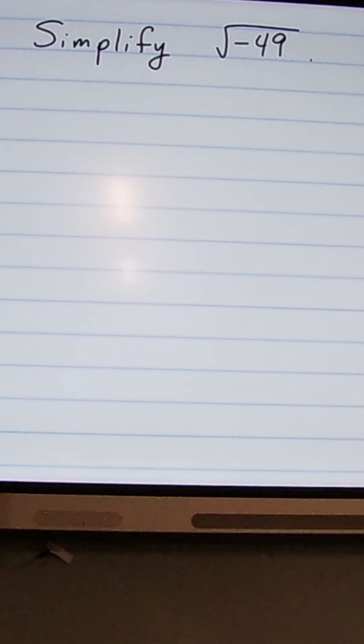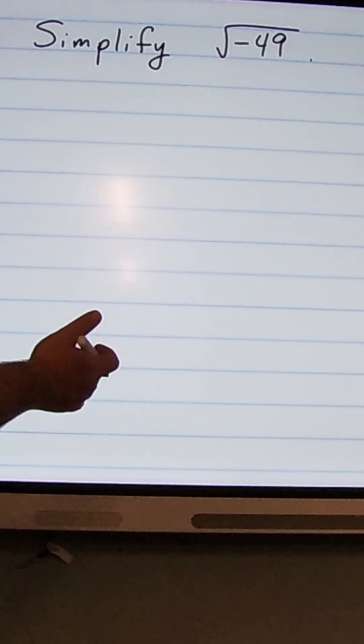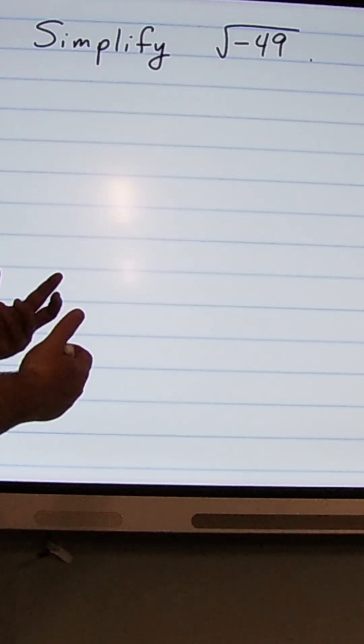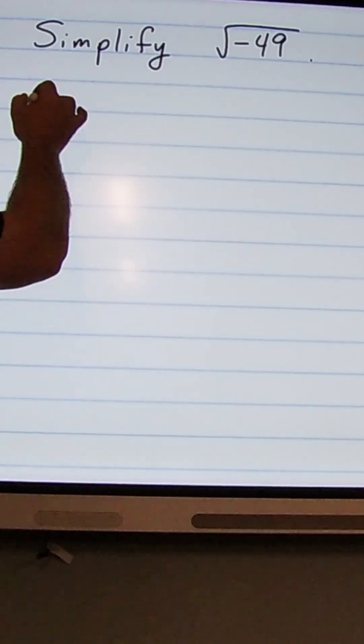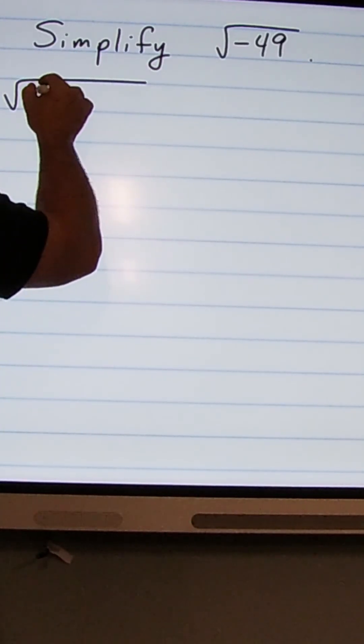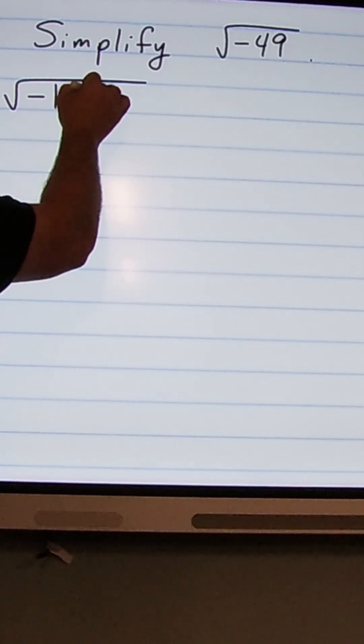All right, in this problem we're going to simplify the square root of negative 49. The first thing we want to do is factor out the square root of negative 1. So I'm going to rewrite this as the square root of negative 1 times 49.